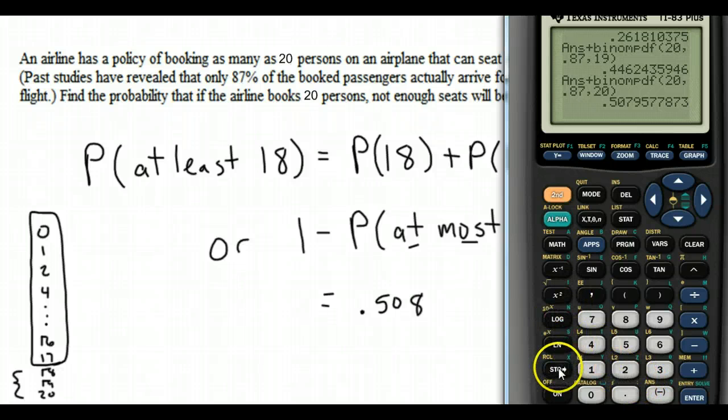And then we get that 0.508 again. So we can do it one at a time, add them all together, or we can do all of it at the same time if we use the CDF.